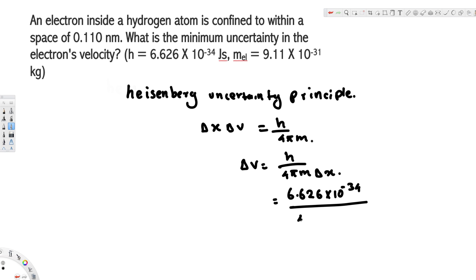times Δx. Δx is this space value: 0.110 nanometers, which is 10⁻⁹. That's going to give us 5.26 × 10⁵ meters per second.